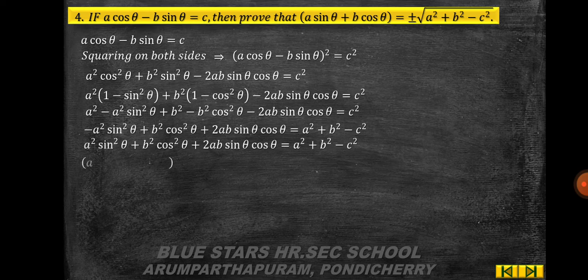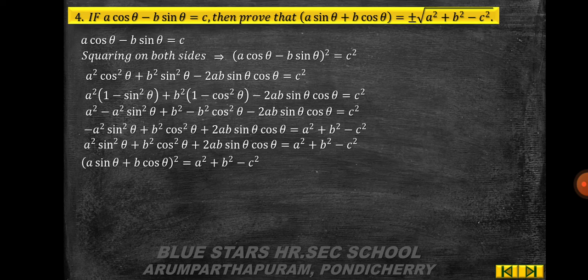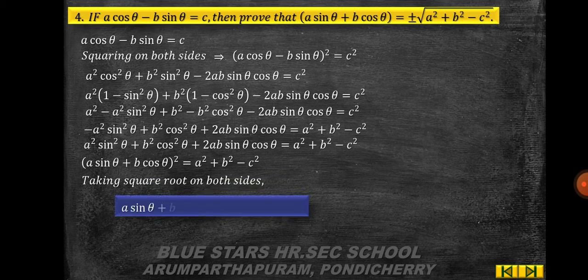The left-hand side is in the form (a + b)², so (a·sinθ + b·cosθ)² = a² + b² − c². Taking square root on both sides: a·sinθ + b·cosθ = ±√(a² + b² − c²). Hence proved.